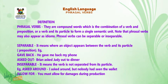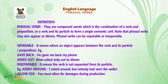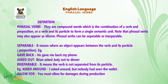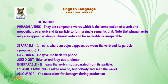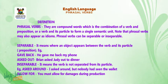Now, how do we define phrasal verbs? They are compound words which are a combination of a verb and preposition, or a verb and its particle, to form a single semantic unit. Students, please note that phrasal verbs may also appear as idioms — that means some phrasal verbs can be used as idioms.